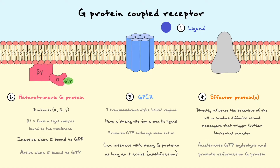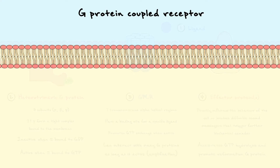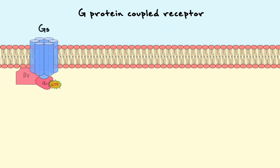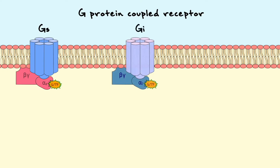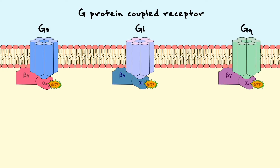One last thing to emphasize before we examine actual examples of GPCRs is that for each component — ligand, receptor, G-protein, and effector — there are hundreds of different types that all have different functions in the cell and lead to different biochemical cascades. The way I will differentiate the various mechanisms is by considering what type of G-protein interacts with the receptor. In this video, we will consider three different G-protein pathways: Gs, Gi, and Gq. As I discuss these mechanisms, I will introduce the concept of second messengers and phosphorylation.